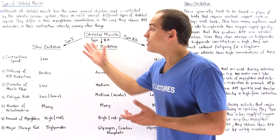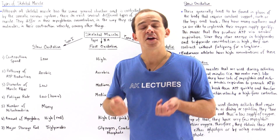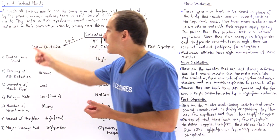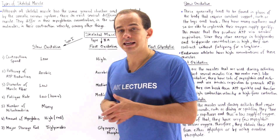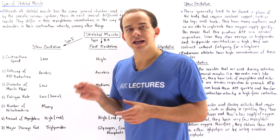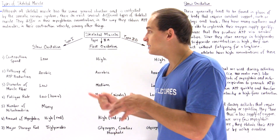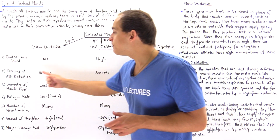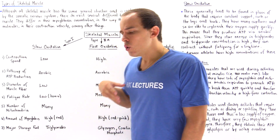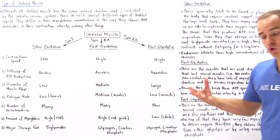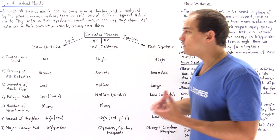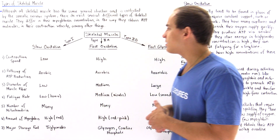These muscles are used when we carry out very long activities such as running a marathon. Running a marathon means we need muscles that will not fatigue very quickly — that's why we use Type 1 muscles. These muscles also have a relatively low diameter, meaning their thickness is low, and so the force produced by these muscles is also low. When running a marathon, we exert a very low force over a very long distance so our muscles don't fatigue quickly.